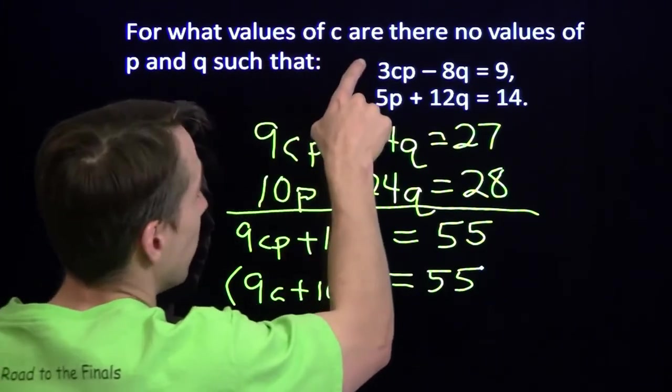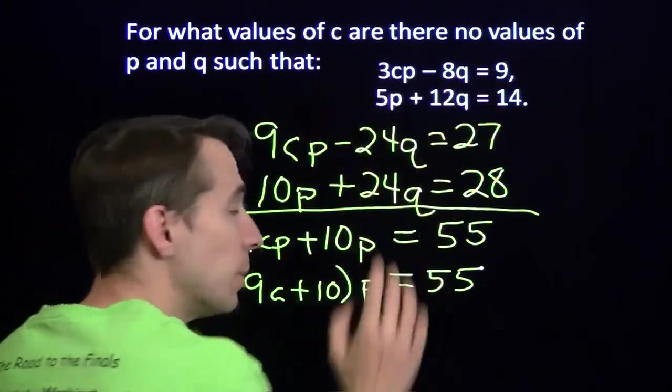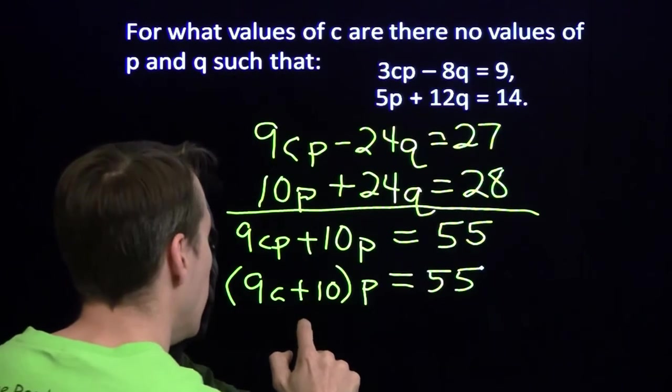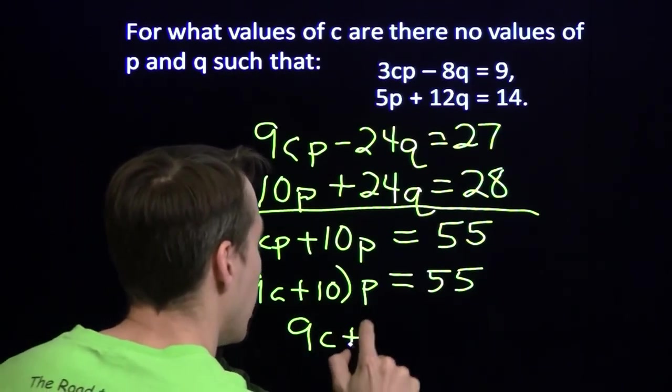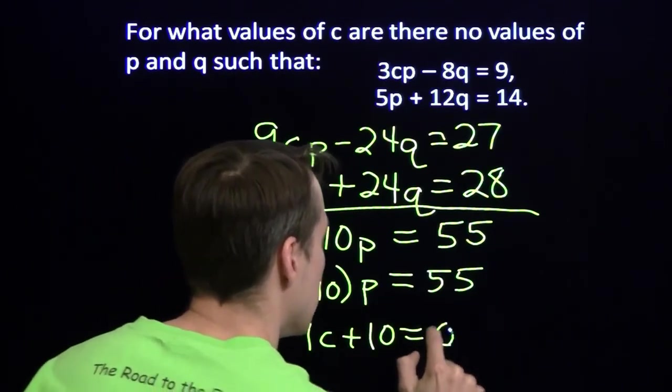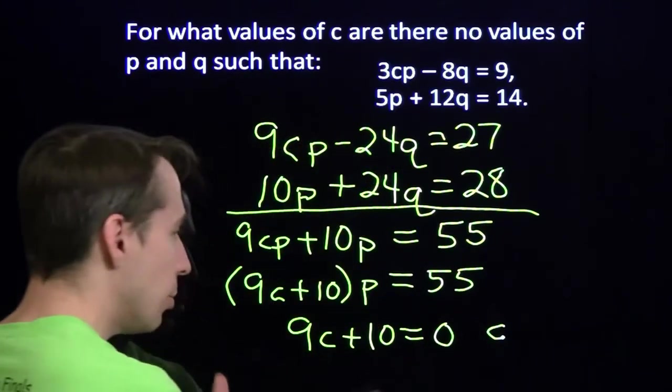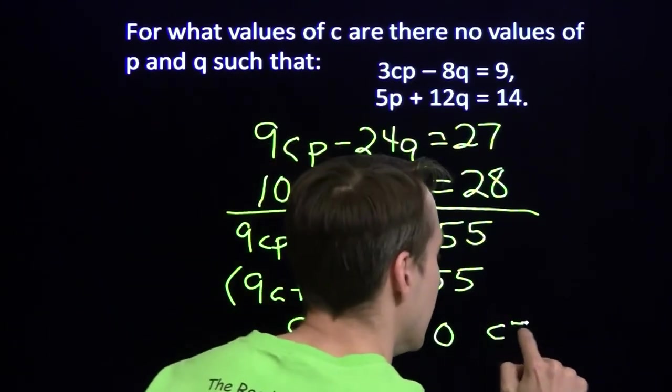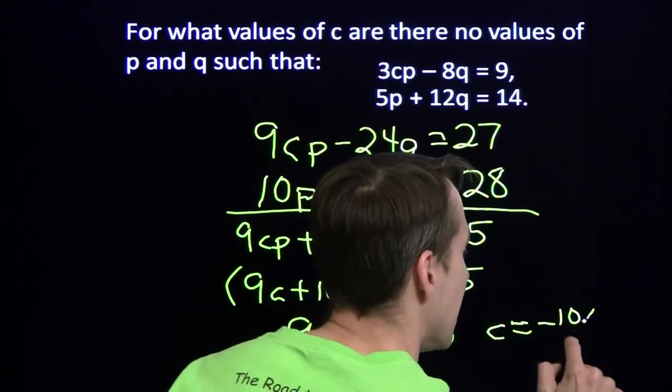So, what we want for our values of c, such that this system has no solutions, we need 9c plus 10 to be 0. Solving that equation, of course, subtract 10 from both sides, then divide by 9, we get c equals negative 10 ninths.